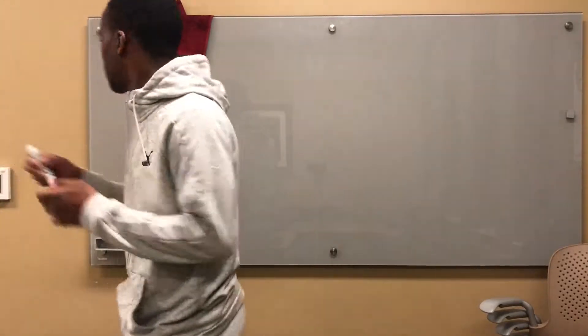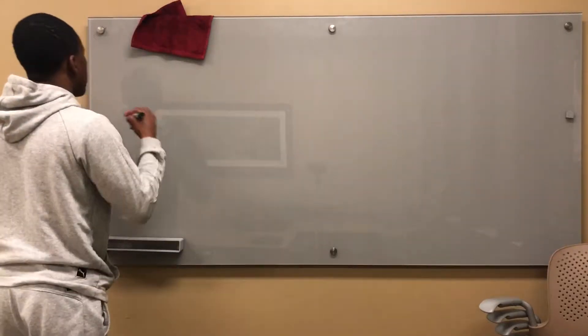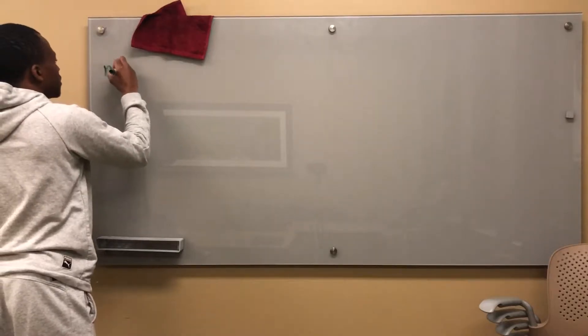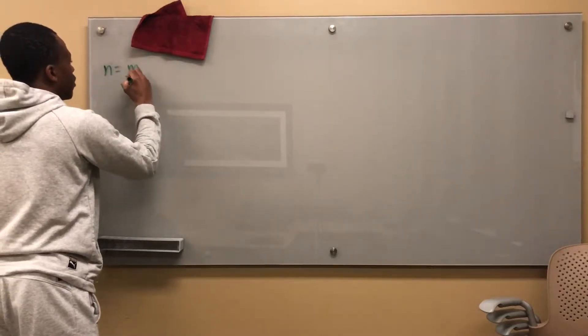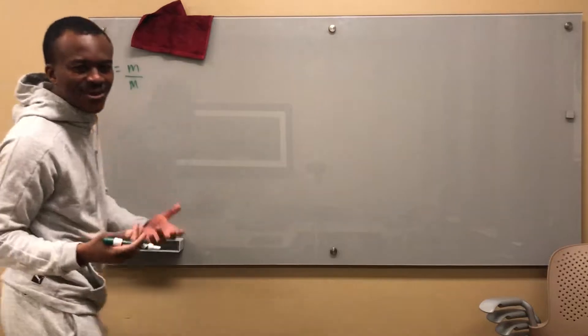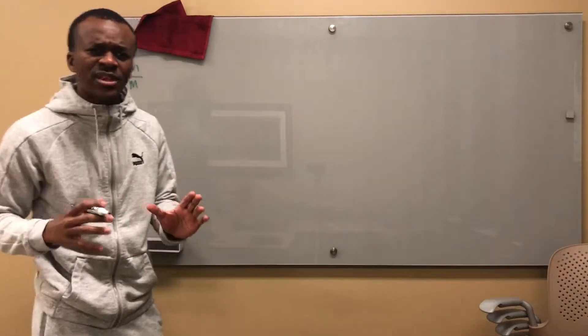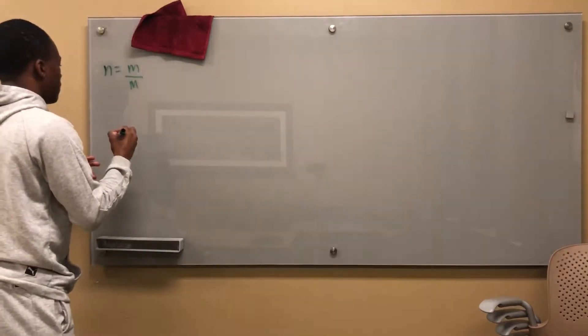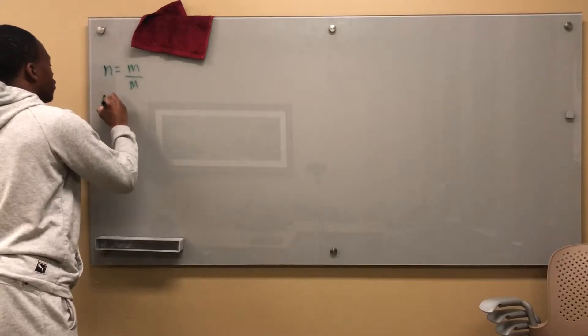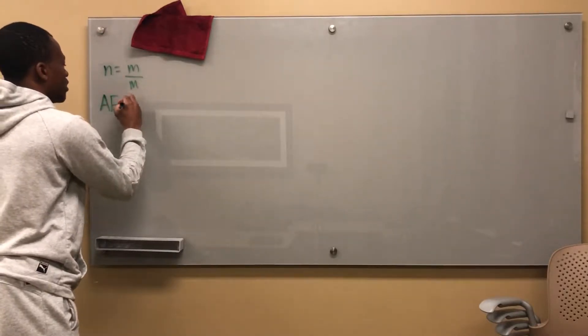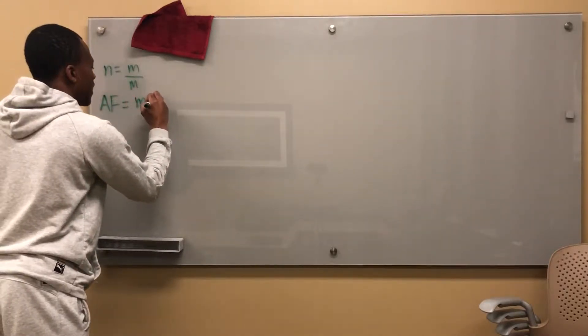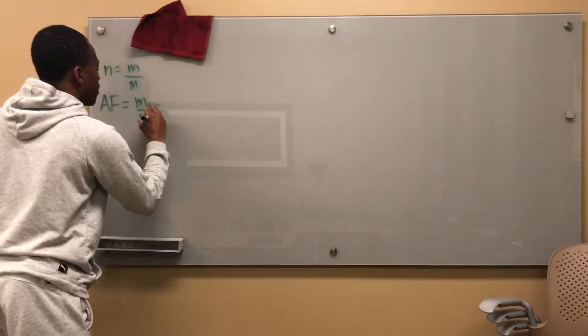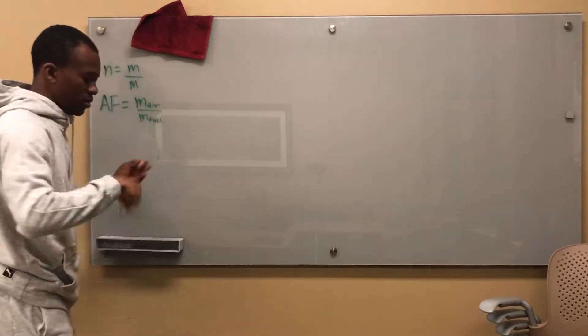Now we're going to need a few equations. First of all, I want to point out that the number of moles is equal to mass over molar mass. And this is bringing chemistry into everything that we've been tackling here. The air fuel ratio is given by the mass of the air over the mass of the fuel.